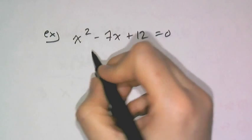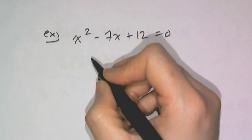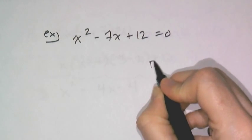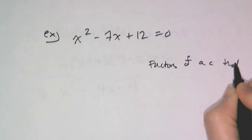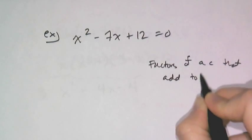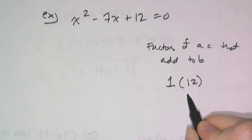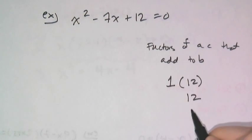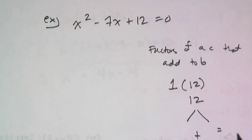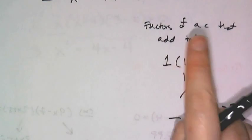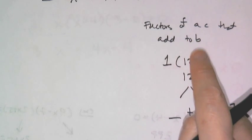So I remember that in a quadratic trinomial I look for factors of a times c that add to b. In this case a is one and c is 12, so I'm looking for factors of 12 that when added together give me negative 7, which means that they both had to be negative to make this whole thing work.